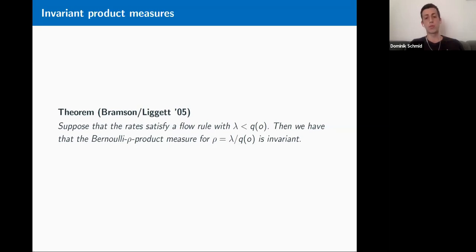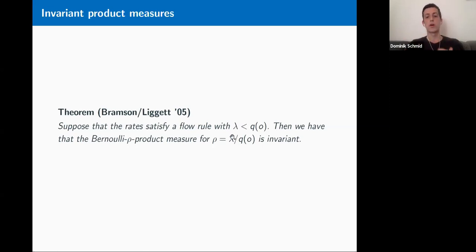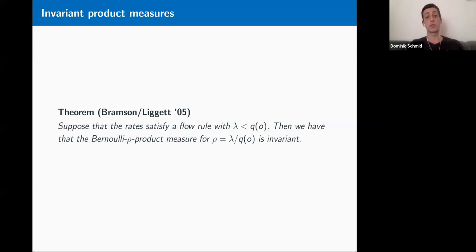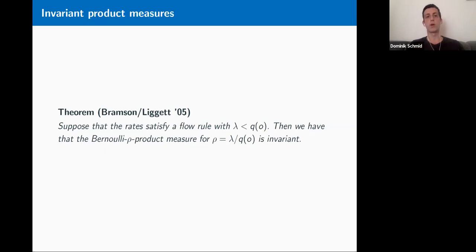In case of a flow rule, it is a theorem by Bramson and Liggett from 2005 that if the rates satisfy a flow rule and the source parameter lambda is less than the strength of the flow q(root), then a Bernoulli-rho product measure with rho equal to lambda divided by the strength of the flow is an invariant measure. This Bernoulli-rho product measure is actually an extremal invariant measure, so by the ergodic theorem we can talk about the limit in an almost sure sense.